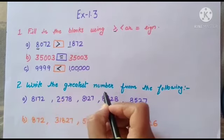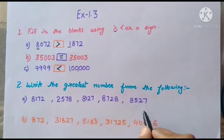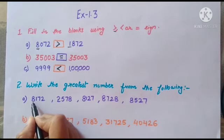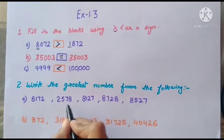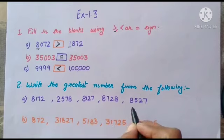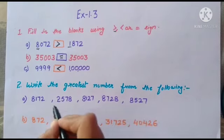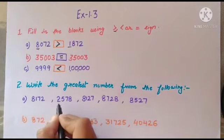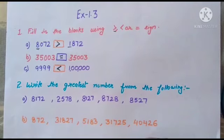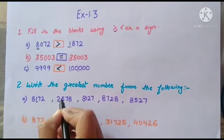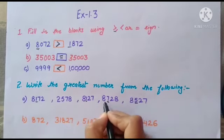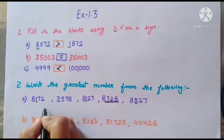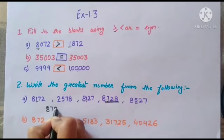Question 2: Write the greatest number from the following. First, look at the first digit of each number — 8 appears in all of them, so we move to the second digit: 1, 1, 7, 5. The greatest second digit is 7, so the greatest number is 8728.